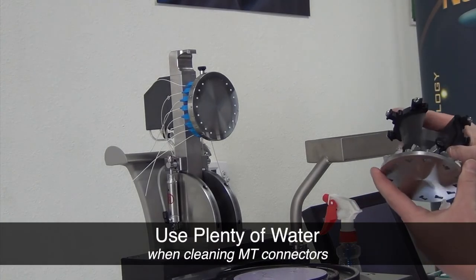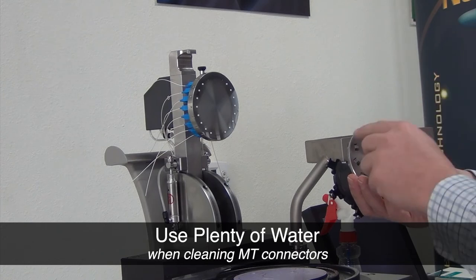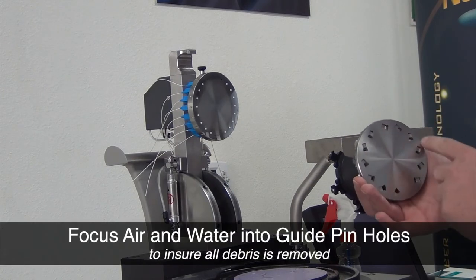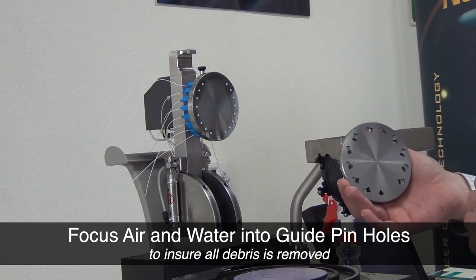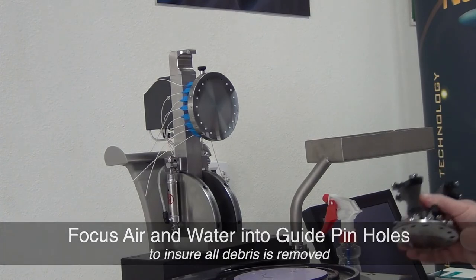When polishing MT-style connectors, it's important to use more water and more air. Use the air and the water together to clean out the guide pin holes that are used for alignment of the MT connectors. Basically, it's the same procedure. Just spend more time and use more air and more water.